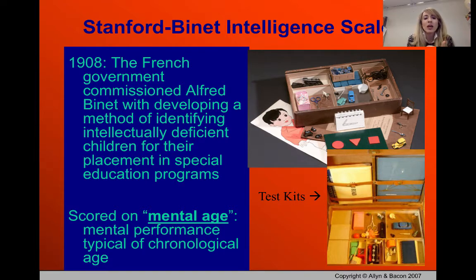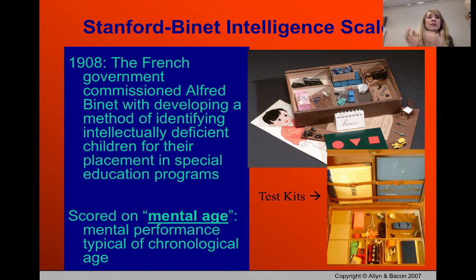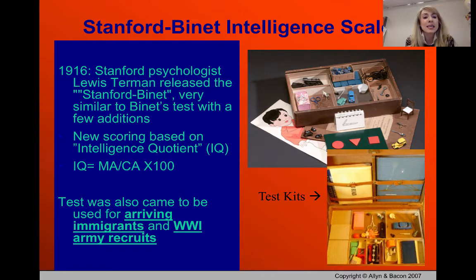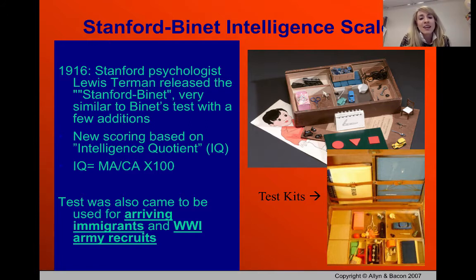Binet scored the test using the concept of mental age. An average nine-year-old should perform like other nine-year-olds; if they performed like a seven-year-old, they were below average, and if they performed like an eleven-year-old while being seven, they were above average. He compared mental performance to what was typical for a given chronological age. In 1916, Stanford psychologist Lewis Terman brought this test to America, renamed it the Stanford-Binet test, and made additions to the types of questions and scoring.